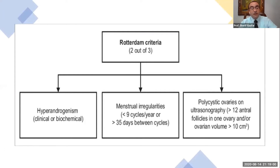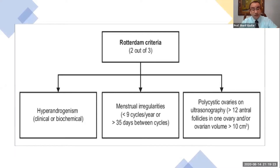In 2003, the Rotterdam criteria — the most famous and most successful criteria — came out. The diagnosis depends on finding two out of three: hyperandrogenism either clinical or biochemical, menstrual irregularities defined as less than nine cycles per year or cycle frequency of more than 35 days, and polycystic ovarian ultrasound morphology, diagnosed as more than 12 antral follicles per ovary or ovarian volume more than 10 cubic centimeters.